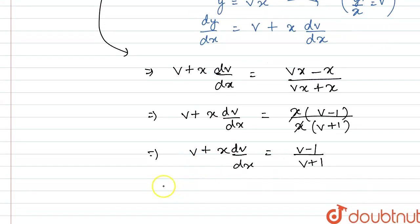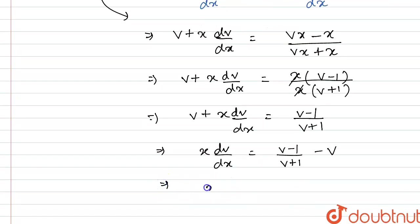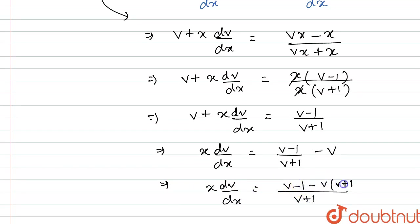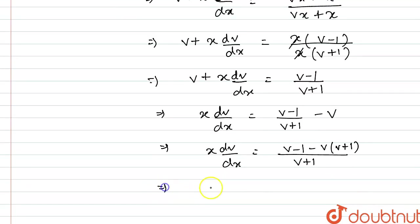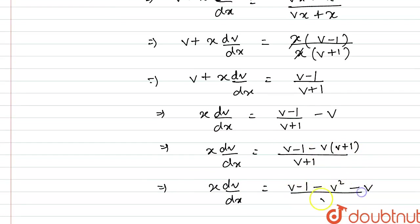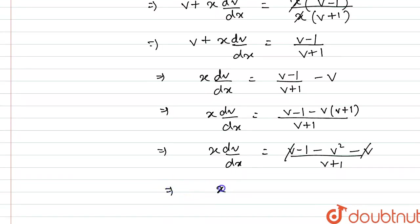Taking LCM, x(dv/dx) = [v - 1 - v(v + 1)] / (v + 1). Simplifying the numerator: v - 1 - v² - v. The v and -v cancel each other, so we have x(dv/dx) = -(1 + v²) / (v + 1).